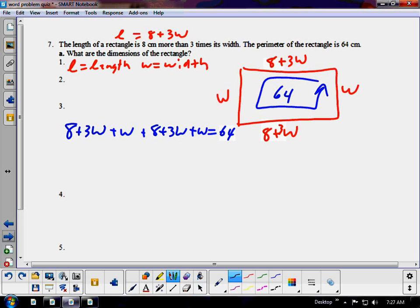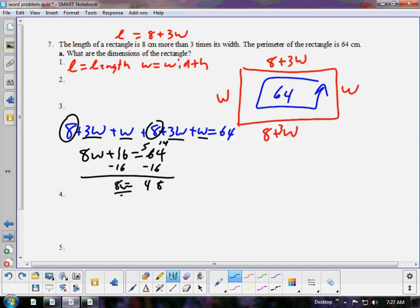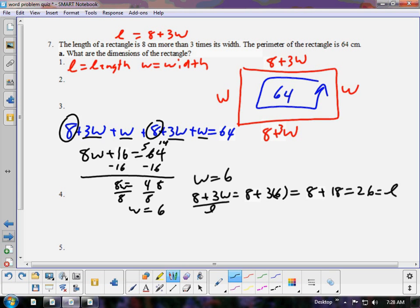And, again, you can do this math in your head. 3 plus 3 is 6, plus 1 plus 1 is 8W's. And then 8 and 8 is 16. And that equals 64. Let's subtract 16 from both sides. 8W equals 48 divided by 8. W equals 6. So, if W is 6, then 8 plus 3W would be 8 plus 3 times 6, which would be 8 plus 18, which would be 26. And that equals L. This is L right here. Not divided by L. This is L. 8 plus 3W.